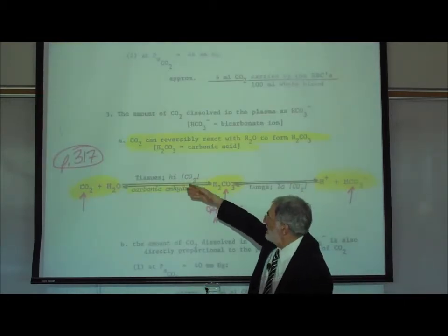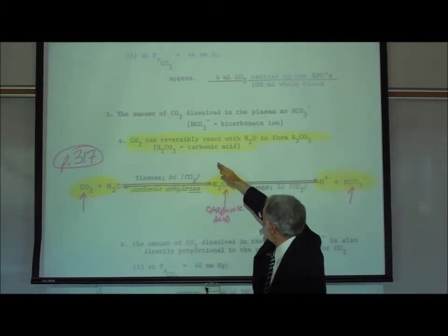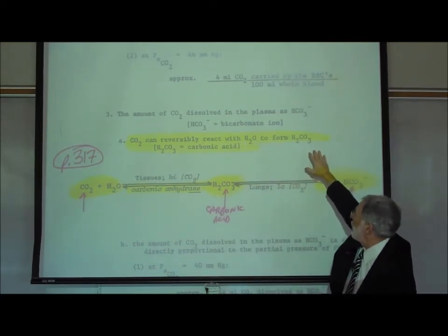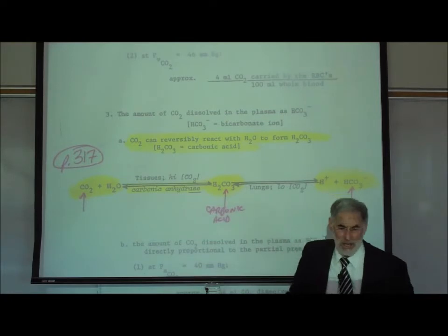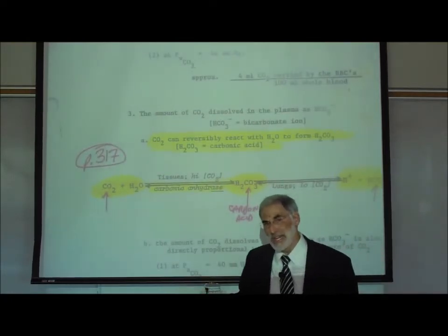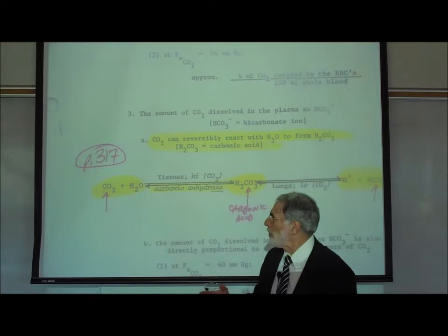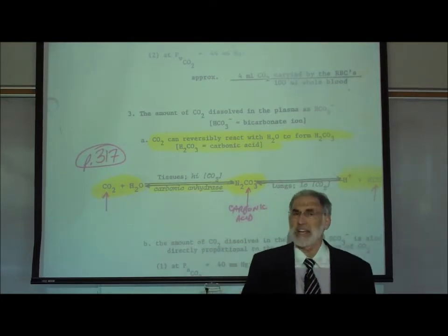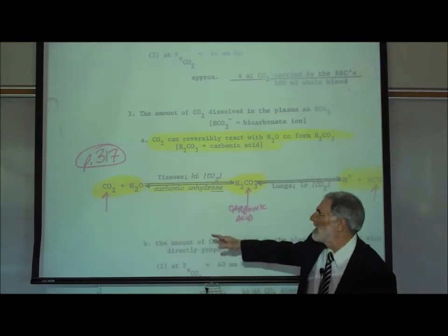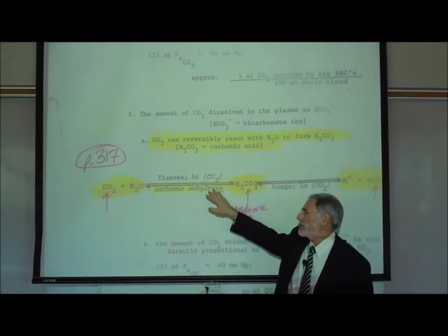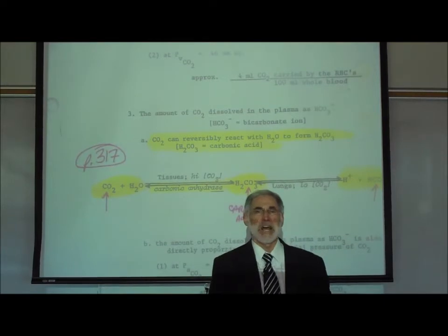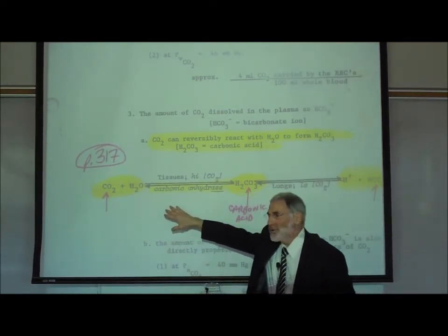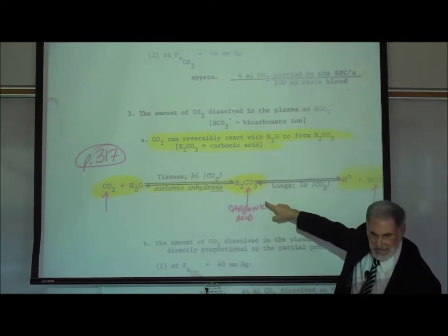Lower down on the page, we wrote that carbon dioxide can reversibly react with water to form carbonic acid. One reason why most of the carbon dioxide reacts with water is because there is an enzyme in the blood, actually associated with the red blood cells, called carbonic anhydrase. This enzyme catalyzes the reaction of CO₂ combining with water to form carbonic acid.